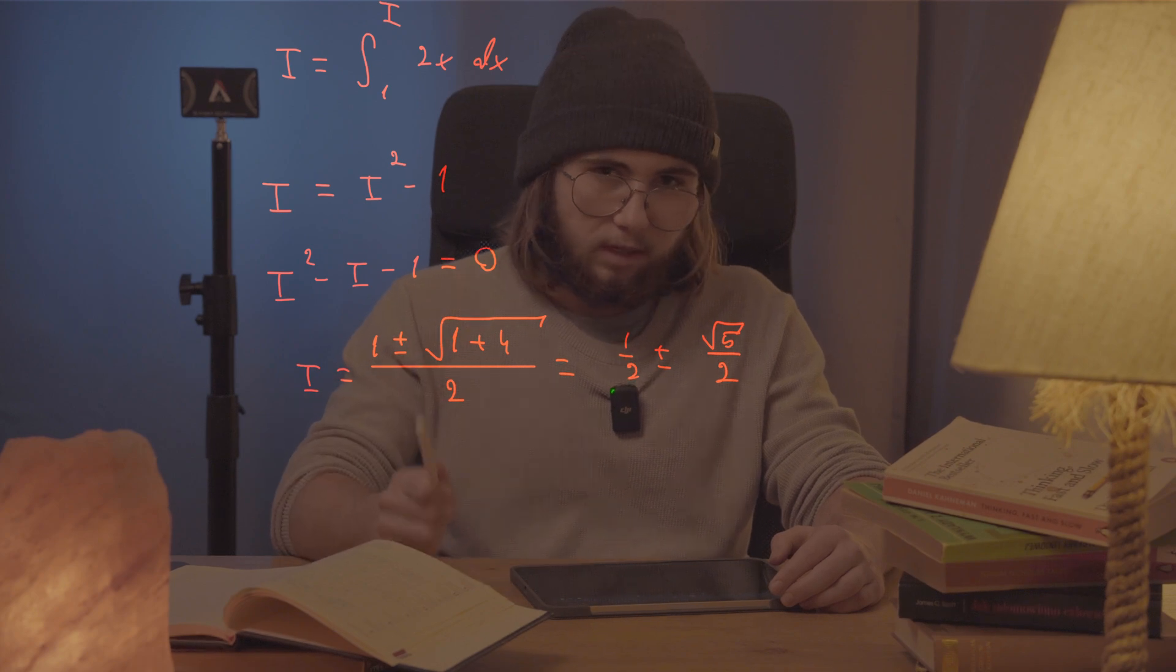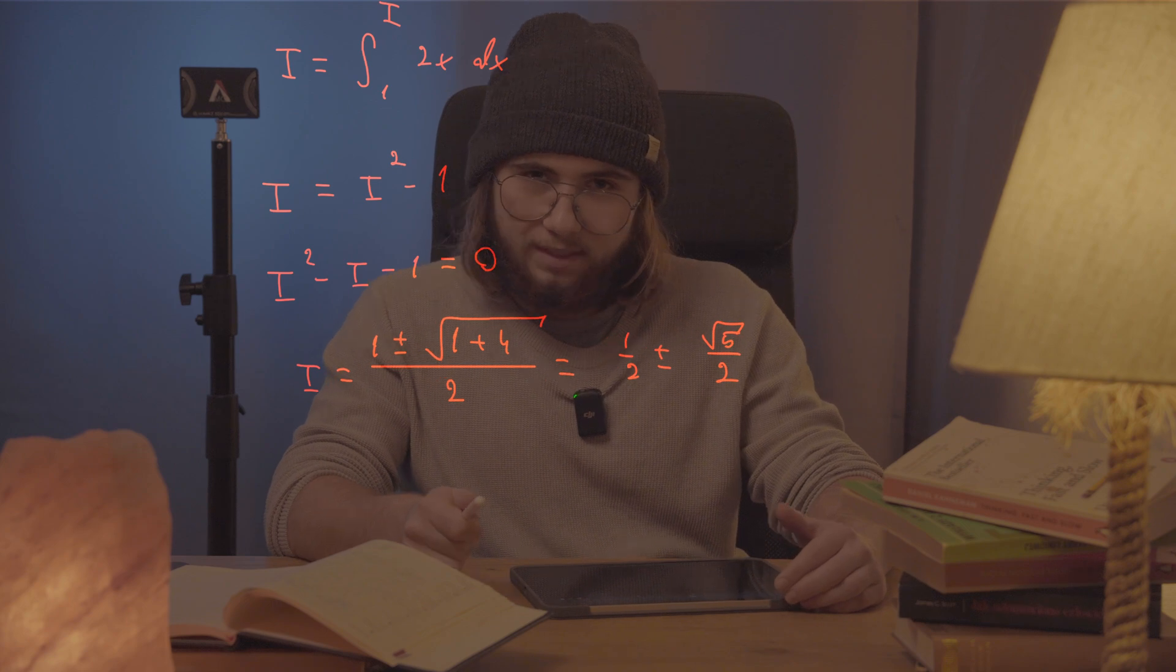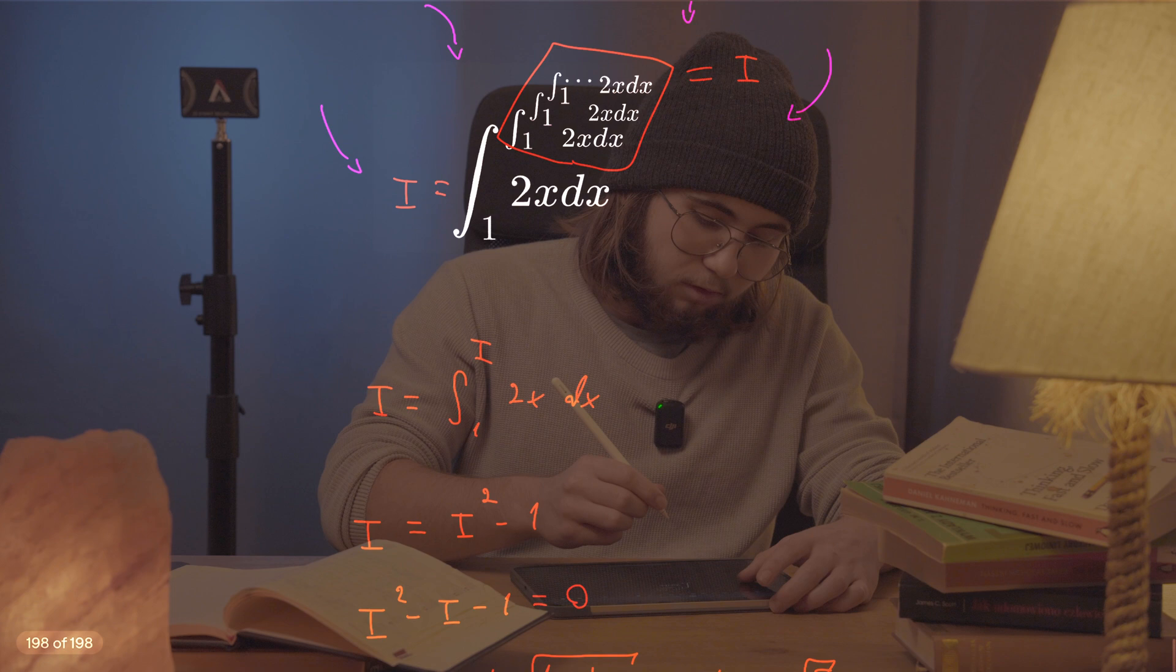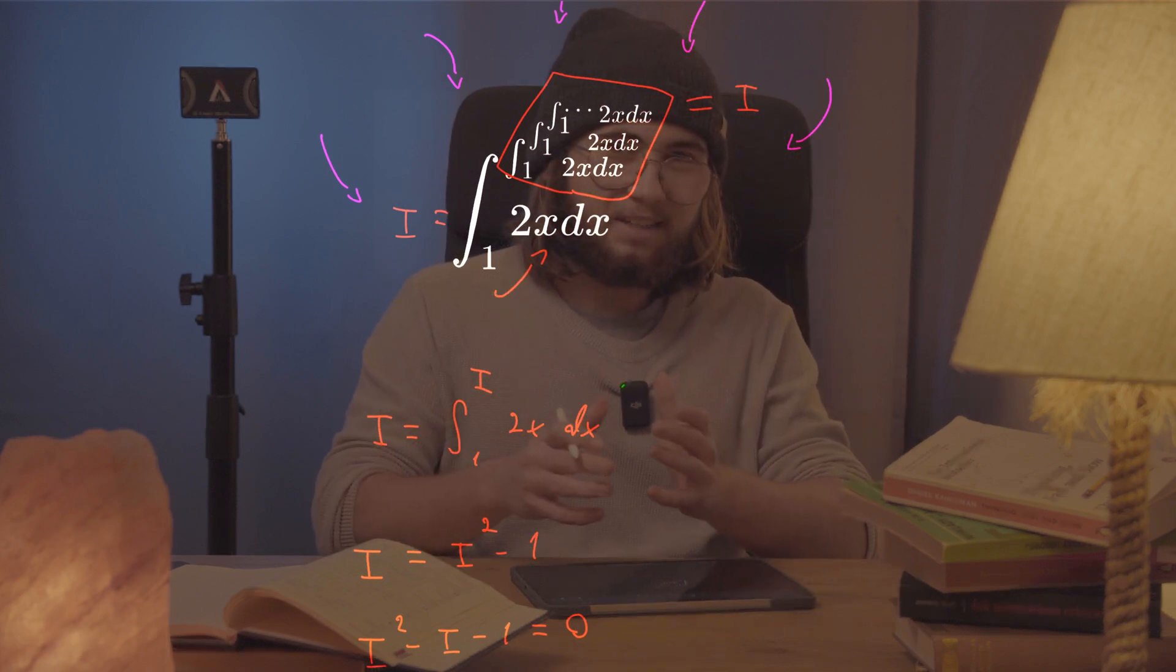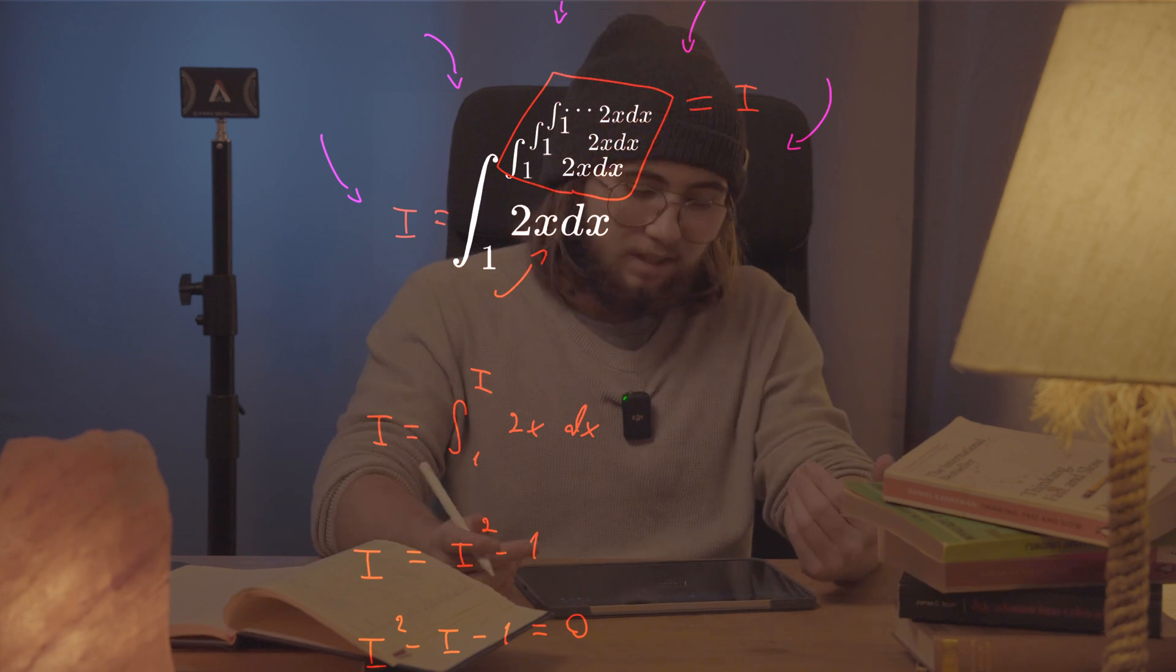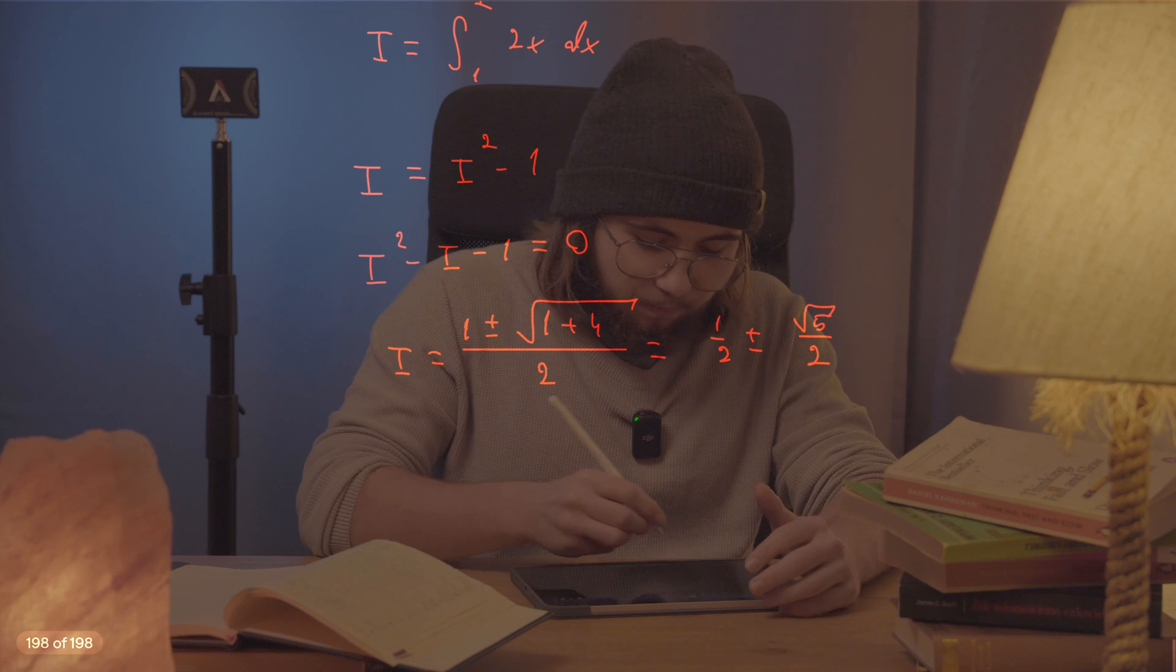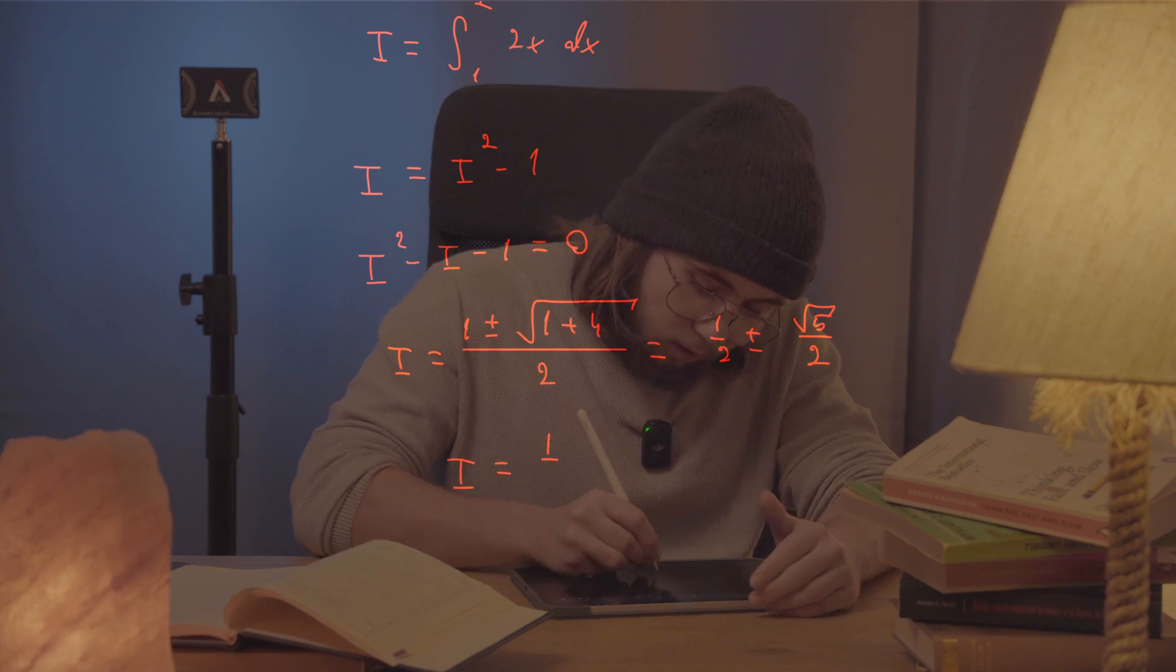half minus the square root of five over two, because that would be quite negative, and we can't really get a negative value out of integrating 2x between one and some positive number. It's just impossible. So we will rule out the first solution and we'll just say that I is equal to solely one